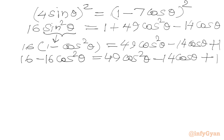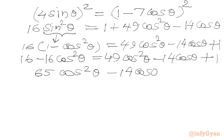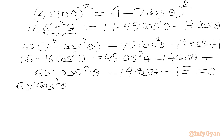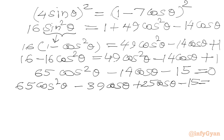Taking all terms to one side gives 65cos²θ − 14cosθ − 15 = 0. This is a quadratic in cosθ. Using factorization, we split the middle term as −39cosθ + 25cosθ to get 65cos²θ − 39cosθ + 25cosθ − 15 = 0.